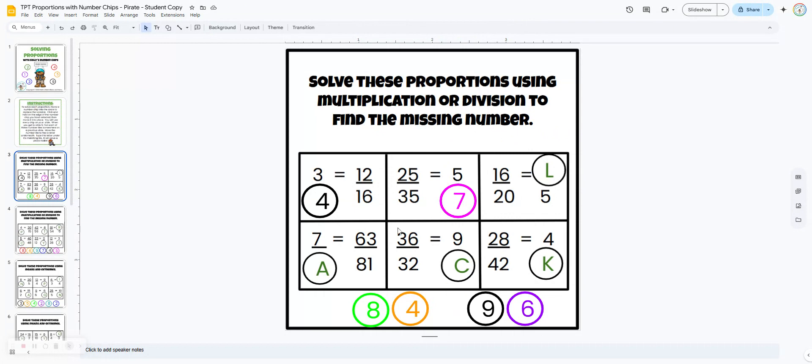Another way it's self-checking is that when they get to the final slide there's going to be a pirate riddle. They're going to solve that by moving certain number chips to the side and then typing in the letter that's underneath. If they've done it correctly they will solve the riddle and I'll show you that in just a minute.